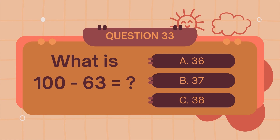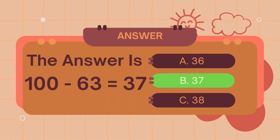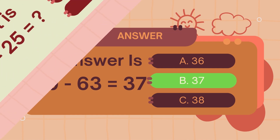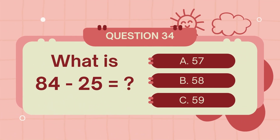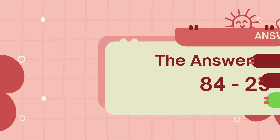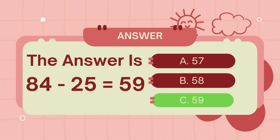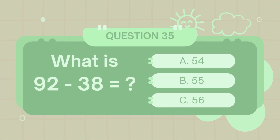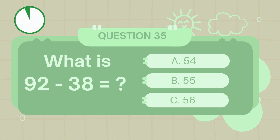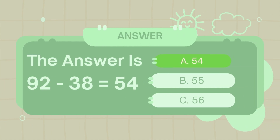What is 100 minus 63? The answer is 37. What is 84 minus 25? The answer is 59. What is 92 minus 38? The answer is 54.